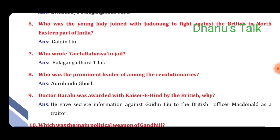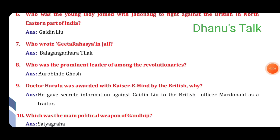Seventh question: Who wrote Gita Rahasya in jail? Answer: Bal Gangadhar Tilak. Eighth question: Who was the prominent leader among the revolutionaries? Answer: Aurobindo Ghosh. Question No. 9: Dr. Haralu was awarded Kaiser-e-Hind by the British. Why? Answer: Because he gave secret information against Gaidinliu to British officer MacDonald, acting as a traitor.